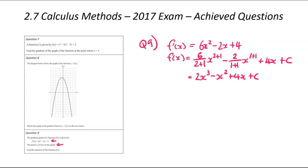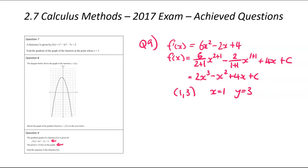We've now got our original function, but the annoying part is we have the plus c. We're going to need to substitute another point to find what that is. Luckily, we were told (1, 3) is a point on this graph — that gives us an x and a y value. So we know x = 1 and y = 3, and we're going to substitute both of those into the antiderivative.